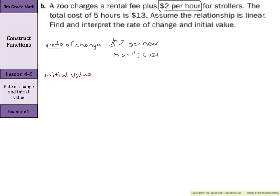What about our initial value? It's not quite given. However, we are given a rate of change of 2, so our slope is 2. And we're also given this fact of 5 hours is $13. We can take that fact and write that as an ordered pair. Our hours being our x, 5, and our total cost being our y, 13. So that can be our x, y.